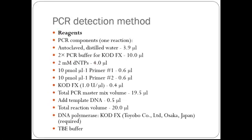PCR detection method reagents for one reaction: autoclave distilled water 3.9 µl, 2x PCR buffer for KOD FX 10 µl, 2 millimolar dNTPs 4 µl, 10 picomole/µl forward primer 0.6 µl and reverse primer 0.6 µl. Note that protocols may vary according to lab conditions. Total PCR master mix volume is 19.5 µl; add template DNA 0.5 µl for a total reaction volume of 20 µl. DNA polymerase and TPE buffer are also required.